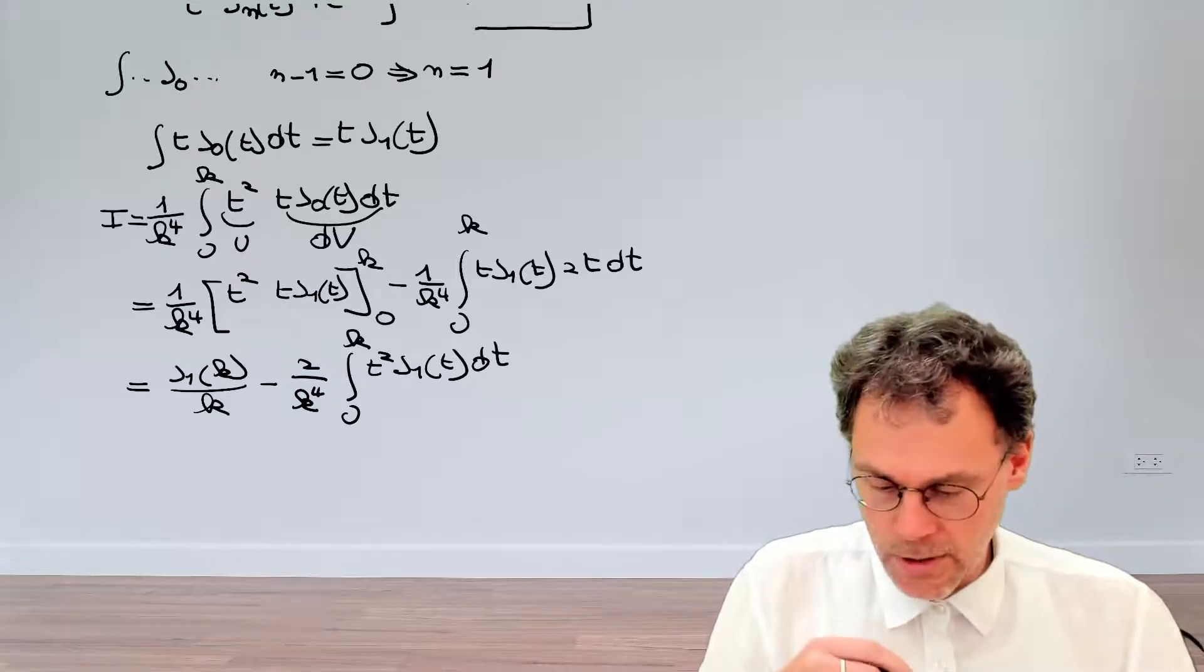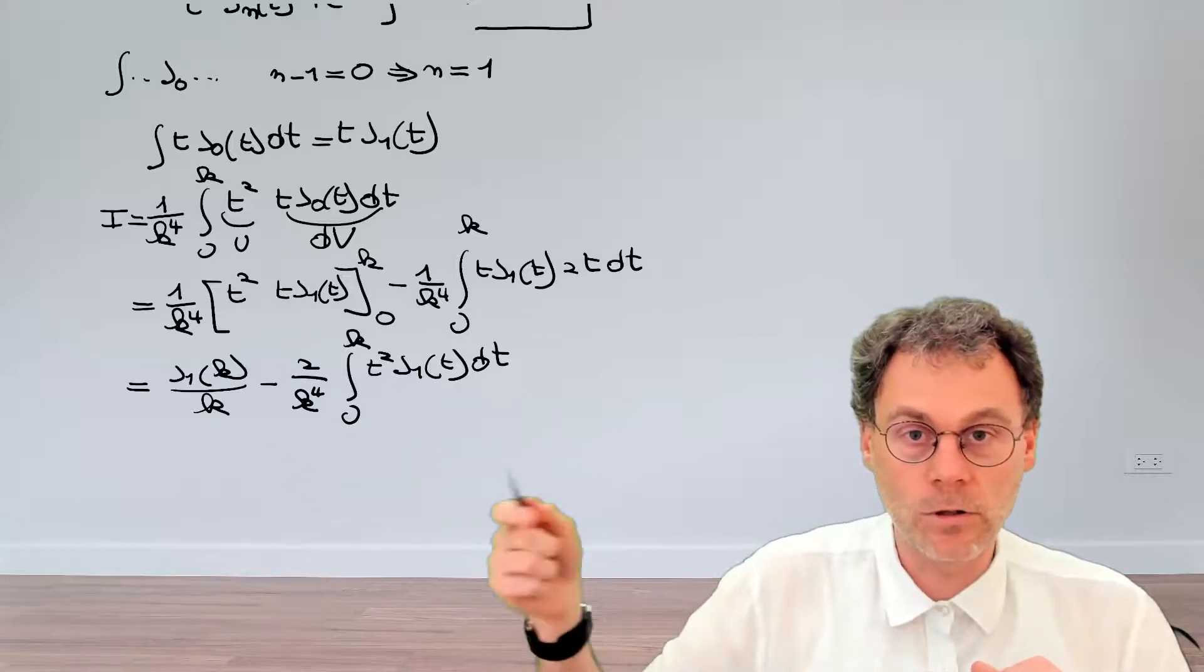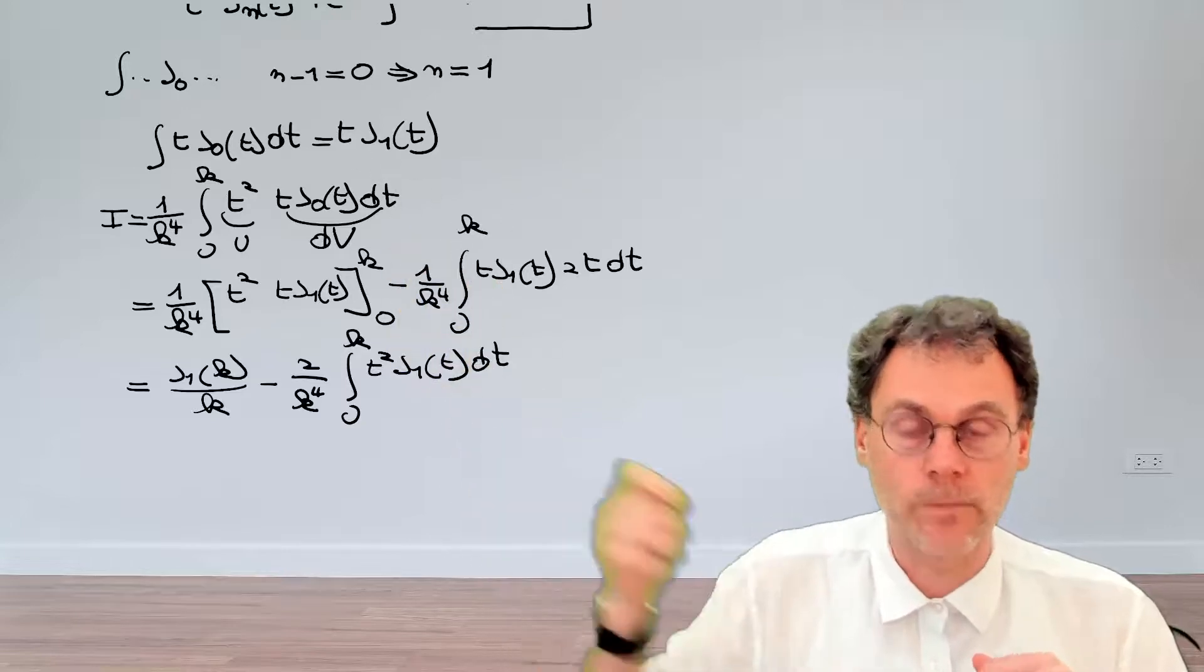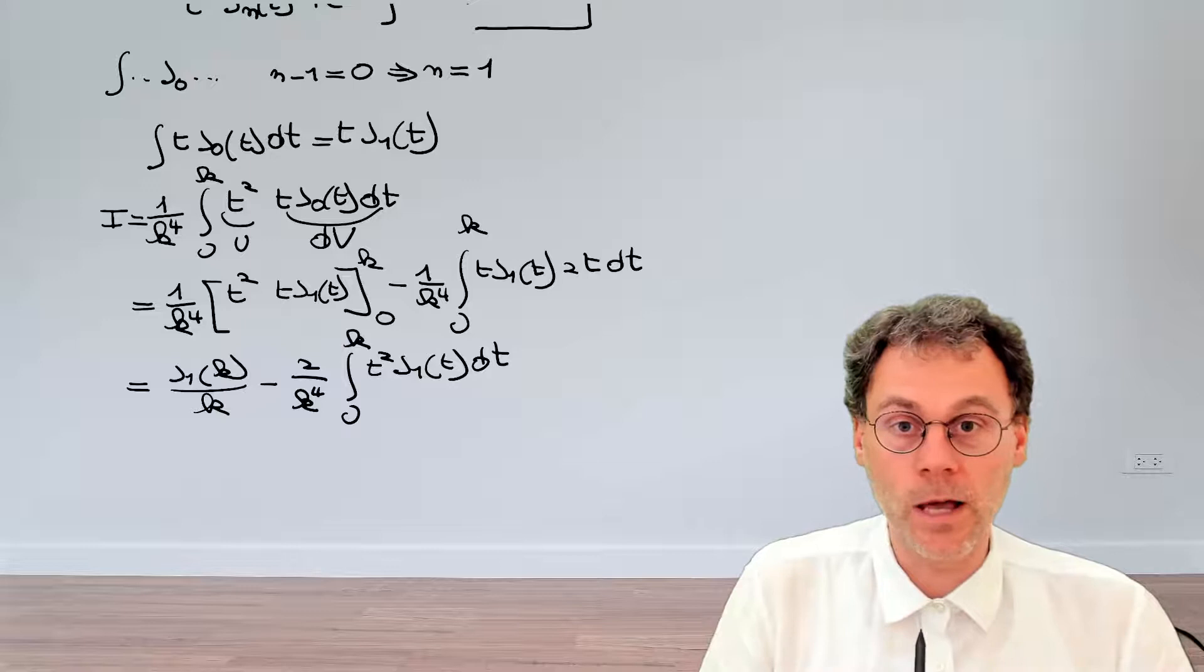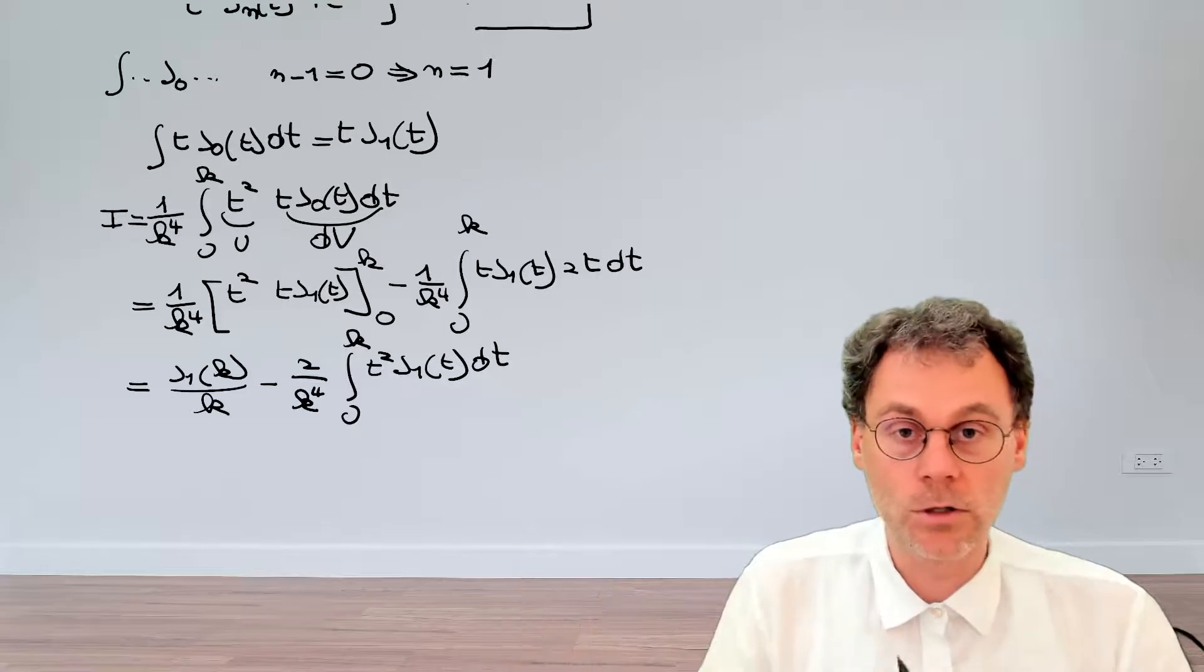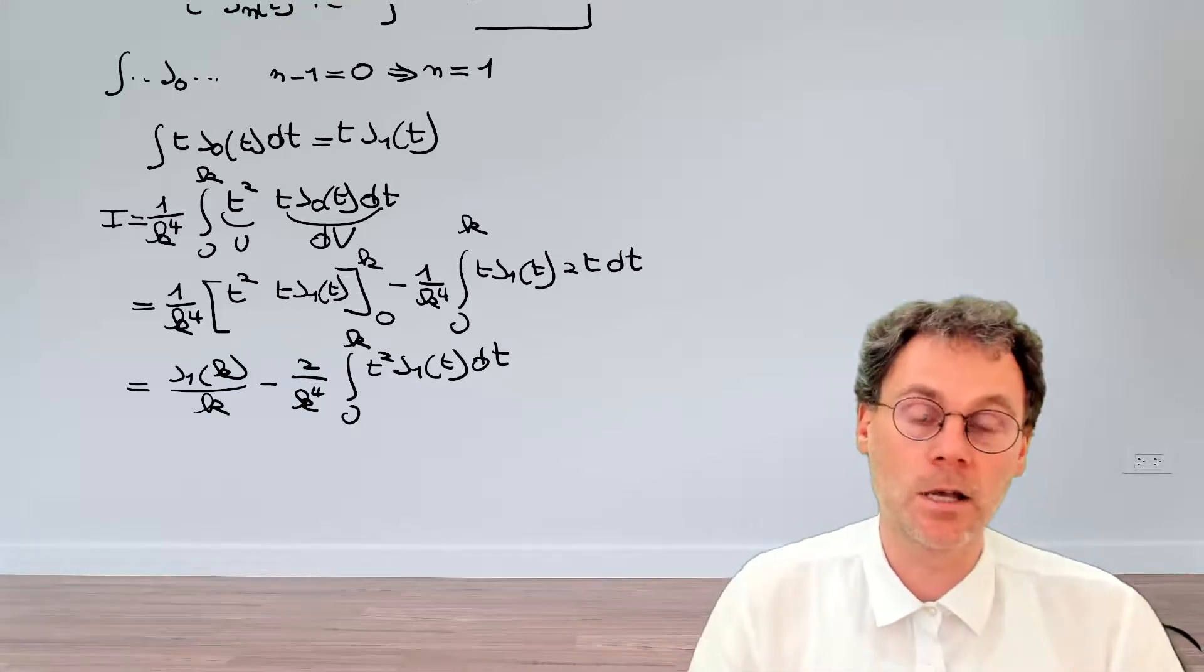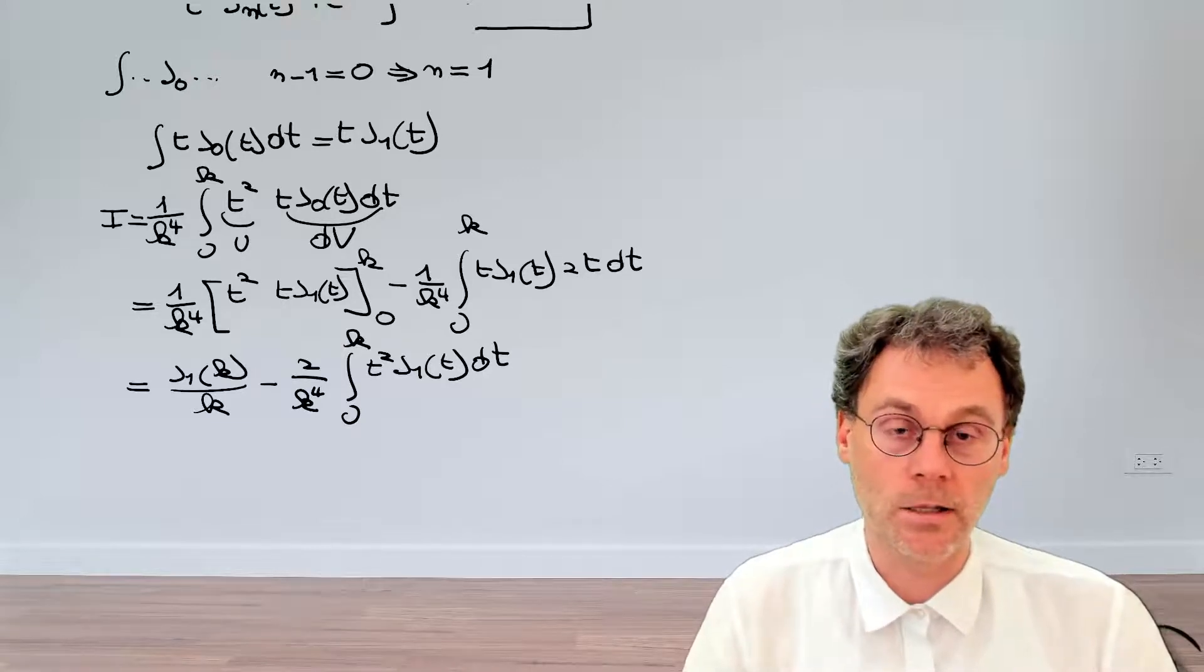So things don't really seem to simplify here. But again, we have an integral of a very similar form. At least we went from a cube to a square. So hopefully, if we keep on applying this technique, we will be able to simplify it. This might be a good time to pause again and see if you can reapply the same techniques that we used earlier in order to finally calculate that integral.